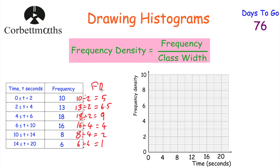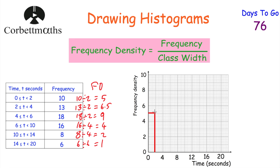Now we're going to draw the histogram. It's a bit like a bar chart in that it has bars, but the vertical axis shows frequency density not frequency. The first bar goes from 0 to 2 seconds with a height of 5. The second bar goes from 2 to 4 seconds with a frequency density of 6.5. The third bar goes from 4 to 6 seconds with a frequency density of 9.